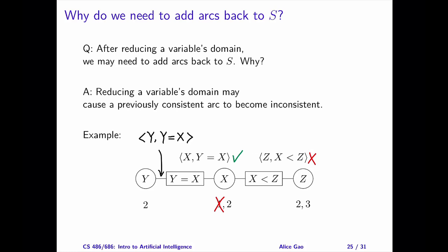Assume that the arc C of X and Y with X as a primary variable is not consistent, and the other arc, Y with C of X and Y, with Y as a primary variable is consistent. Also, assume that after removing one value from X's domain, the arc with X as a primary variable becomes consistent.